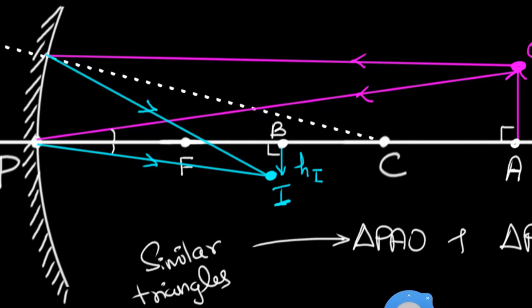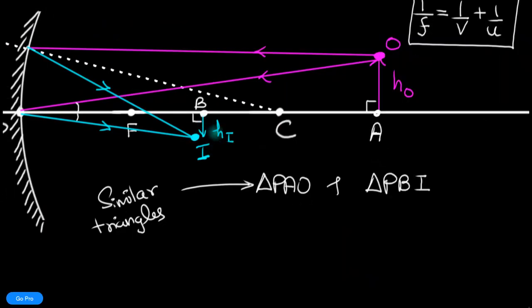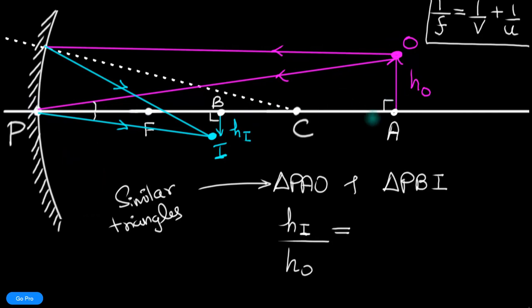Therefore, their sides must be in the same proportion. So the side I'm interested in is this side. So I'm going to take h_i and divide that by h_o. So these two, if you take the ratio of these two sides, that should be equal to the ratio of any other two sides. And the other two sides are, oh look at that, that's just PB divided by PA. And PB is the image distance and PA is the object distance. You see something wonderful. You see that the ratio of their heights is exactly equal to the ratio of their distances along the principal axis.